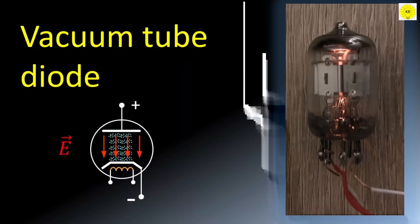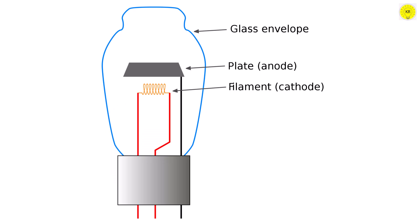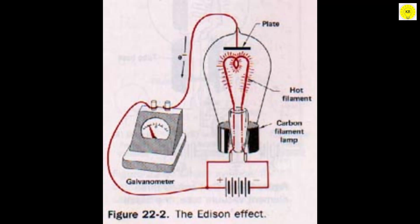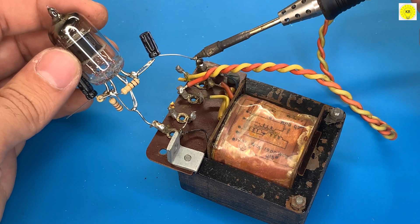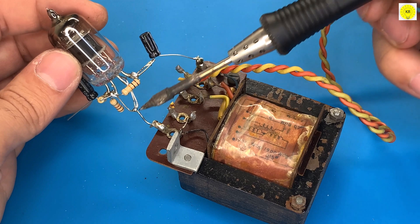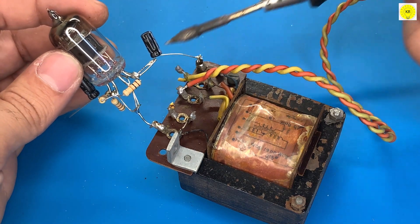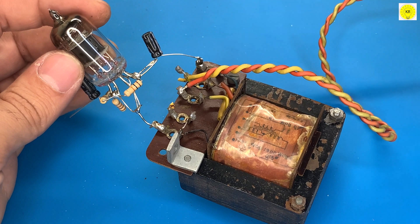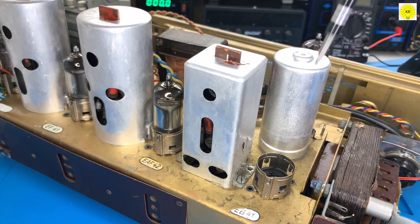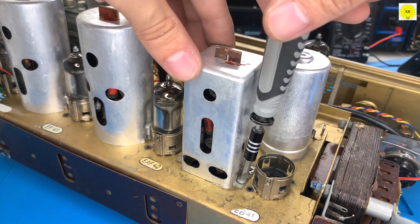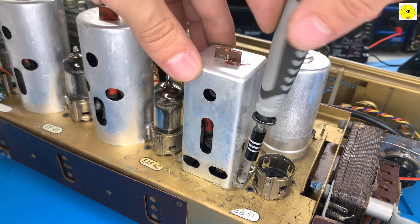Vacuum diode: Vacuum diodes consist of only a cathode and an anode. They allow electrons to flow in one direction only, making them suitable for rectification, converting AC to DC, and as radio detectors. A vacuum tube amplifier is an electronic device that uses vacuum tubes, also known as electron tubes or thermionic valves, to amplify audio or radio frequency signals. These amplifiers were widely used in the mid-20th century and continue to be popular among audiophiles and musicians due to their unique sound characteristics.